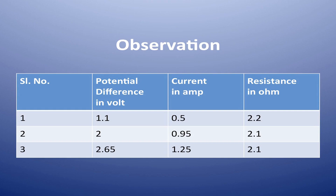We have taken three readings. During the first reading, the potential difference was 1.1 volt and the current reading was 0.5 ampere. In the second case, the potential difference was 2 volt and the current recorded was 0.95 ampere. In the third case, the potential difference recorded was 2.65 volt and the current recorded was 1.25 ampere.